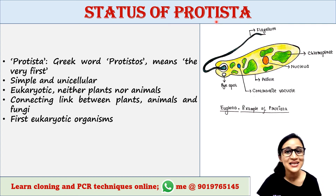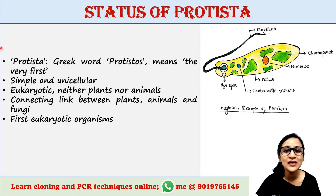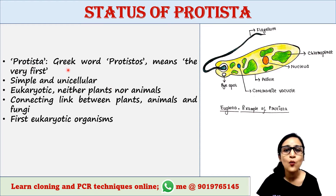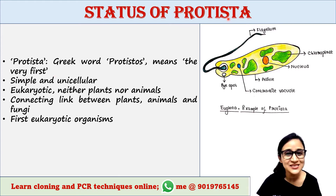When we talk about the status of a particular animal, it means where the animal is placed in its taxonomy, or you can say what is its systematic position. So the term Protista is derived from the Greek word 'prōtistos', which means 'the very first'.